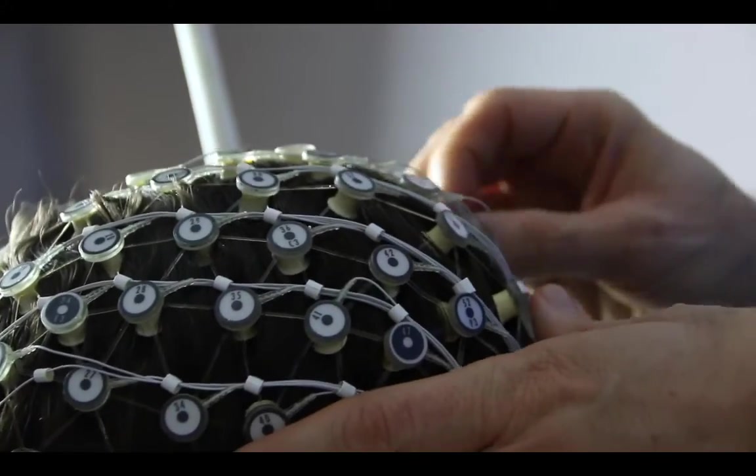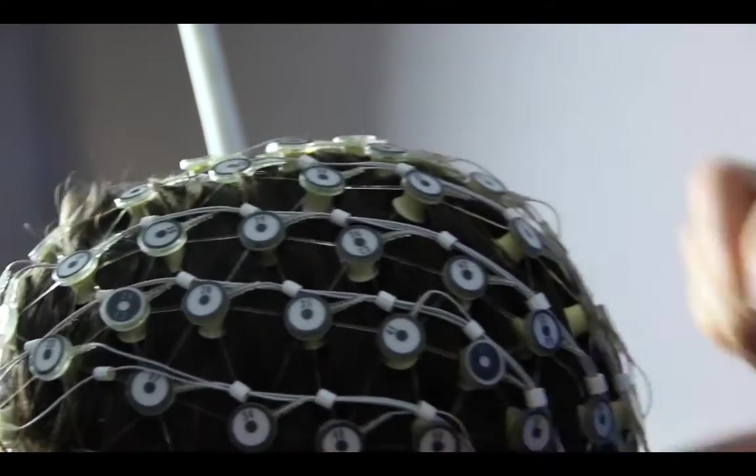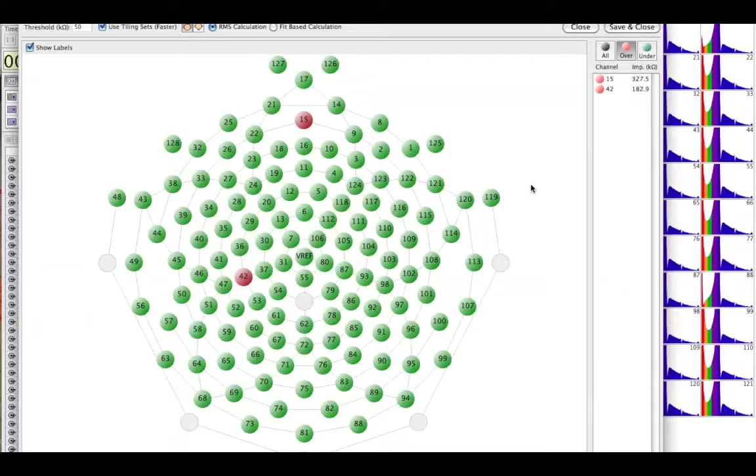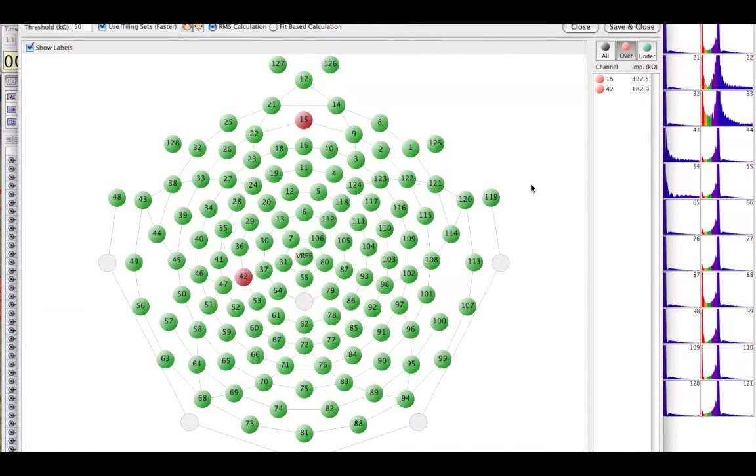After you're done giving a quick wiggle to each of the electrodes, your screen may look something more like this. The green indicates that we are good to go.